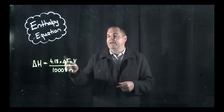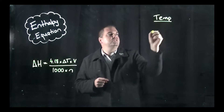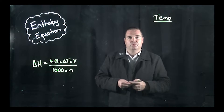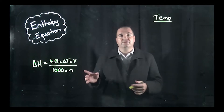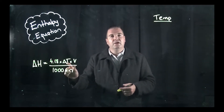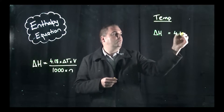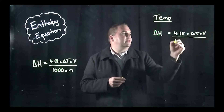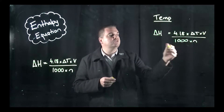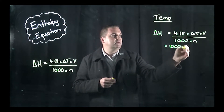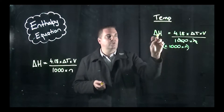I'm going to start off by looking at temperature. If we want to find the temperature, we need to rearrange the equation. When rearranging equations, the first thing you need to remember is that whatever you do to the left-hand side, you must do to the right-hand side also. So what we're trying to do is isolate delta T on its own. If we've got our equation delta H equals 4.18 times delta T times V over 1,000 times N, what we want to do is get rid of the 1,000 times N, so we multiply both sides by 1,000 times N. That's going to cancel out on the bottom and move over to the other side.